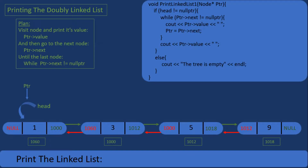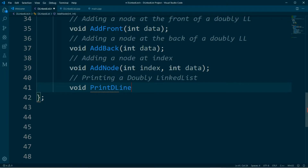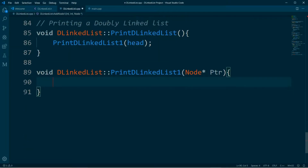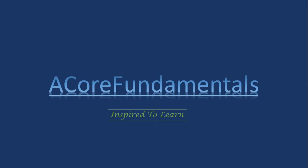We are going to create a function that will display or print a doubly linked list. I will simplify the code for this function using some animation so that you are able to visualize and understand what the code does. I will also show you the code and explain it as we continue to build our linked list project. In this video I will show you how to print a doubly linked list.